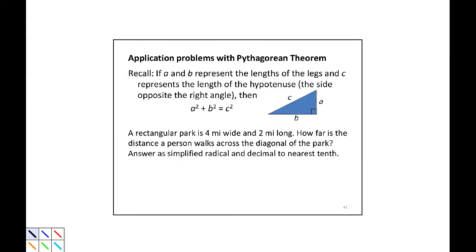The final objective in this section is to use the Pythagorean theorem and what we know about quadratics to solve an application problem. So our first question is, a rectangular park is 4 miles wide and 2 miles long. How far is the distance a person walks across the diagonal of the park? The answer is a simplified radical and decimal to the nearest tenth.